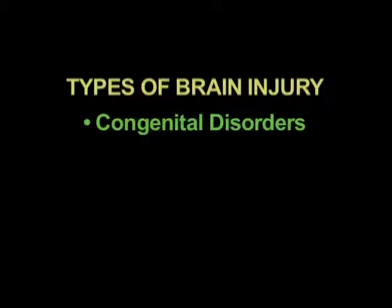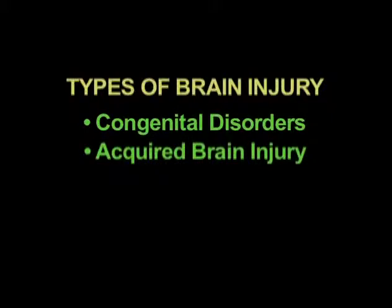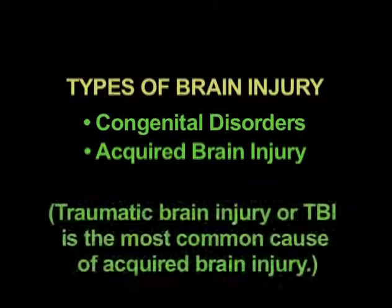Today I'd like to speak to you about the ways that the brain can be injured and how the brain functions, in order to help you understand this very special group of people. There are many different types of brain injuries. Of the major categories, there are congenital disorders, acquired brain injury, and traumatic brain injury.